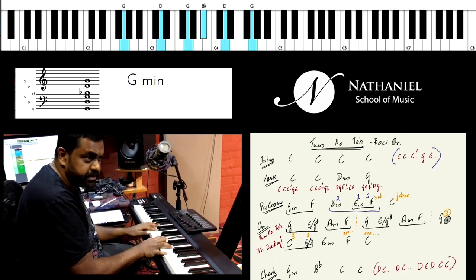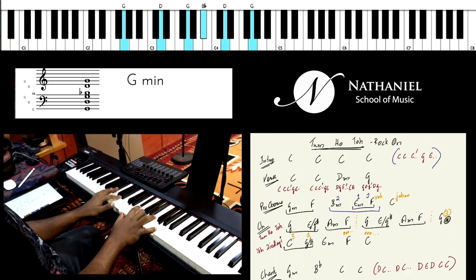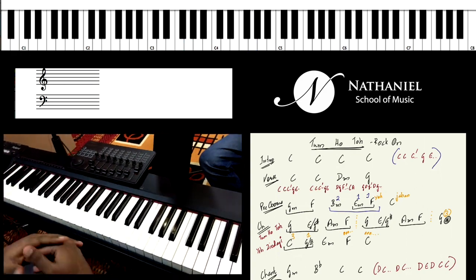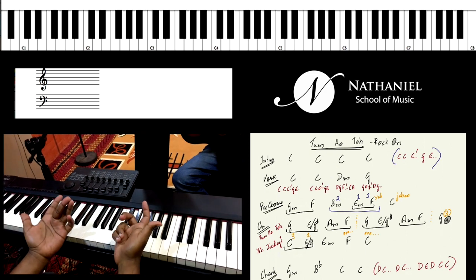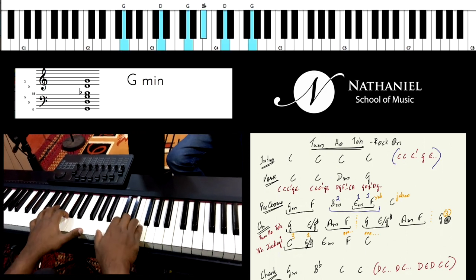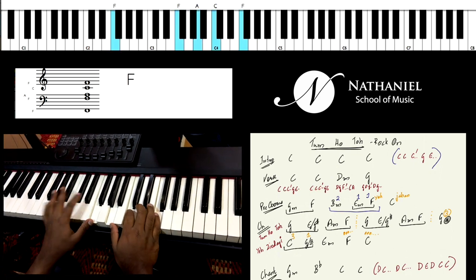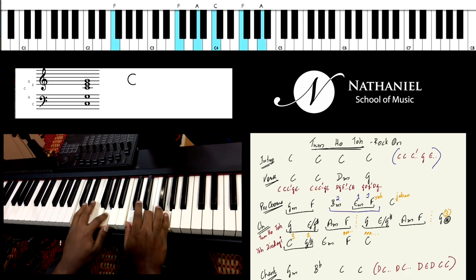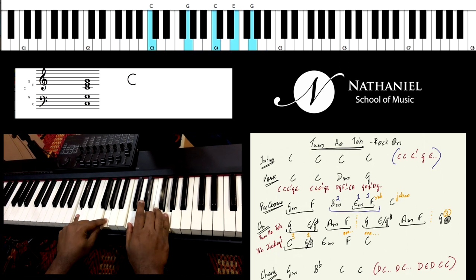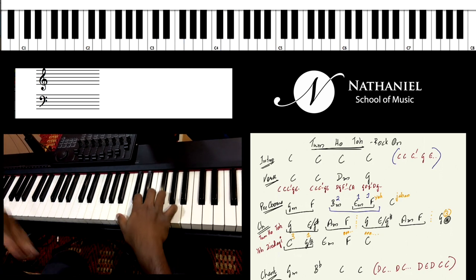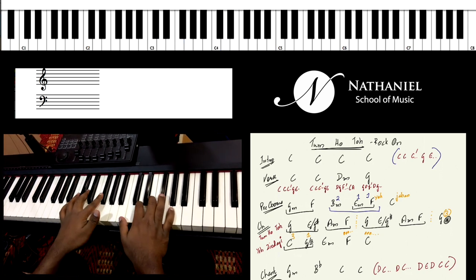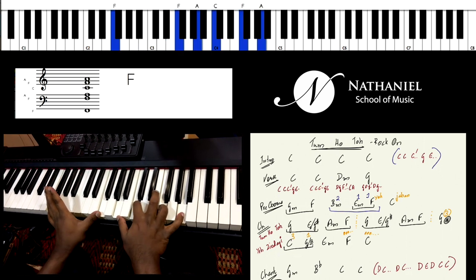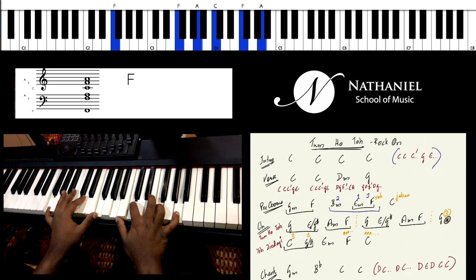So the pre-chorus starts on the G minor and there's a quick change going to the F major chord. Quick change basically means in the time of four beats you need to fill not just one but more than one chord. So you do G minor twice, F major twice, and then B minor twice, E minor once, F major once, and end on C, two, three, four. There's an even quicker change in the second half of the pre-chorus where you go B minor twice, E minor once, and F major once.